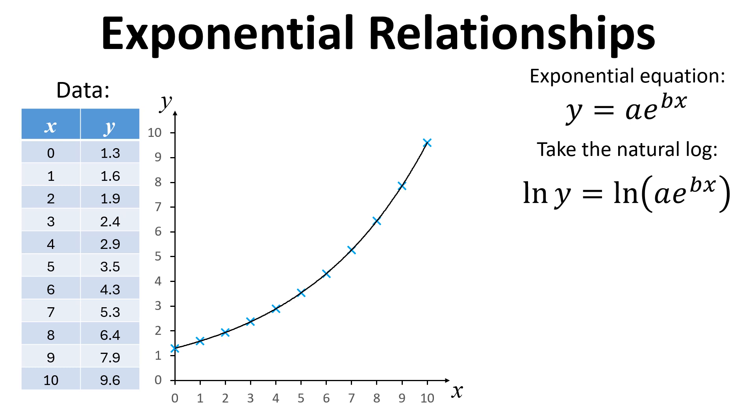If we take the natural log of both sides, we get ln y equals ln of a times e to the power of bx. Now we can use the properties of logs to simplify this equation. We have natural log of y equals natural log of a plus natural log of e to the power of bx.